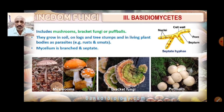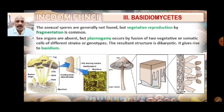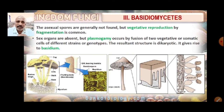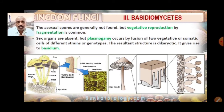The mycelium is branched and septate. Asexual spores are generally not found in Basidiomycetes. However, vegetative reproduction by fragmentation is common — each piece of the mycelium can grow into a new organism.